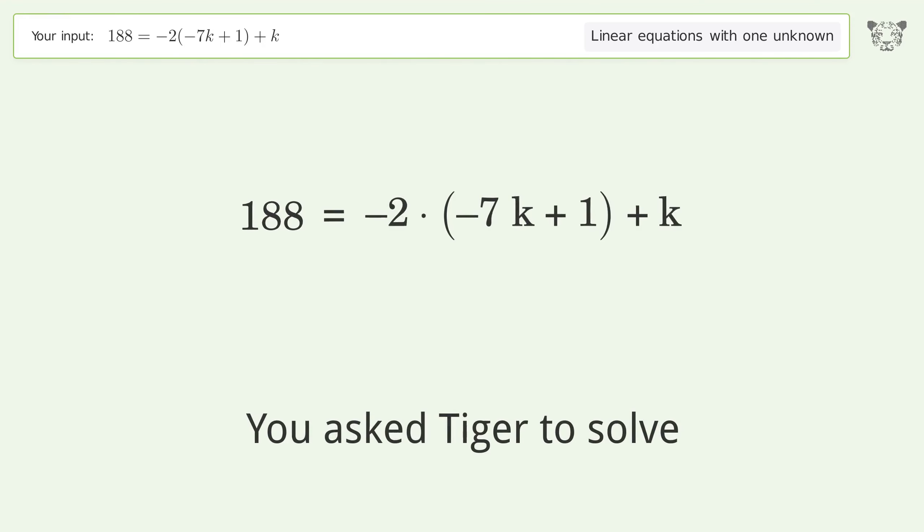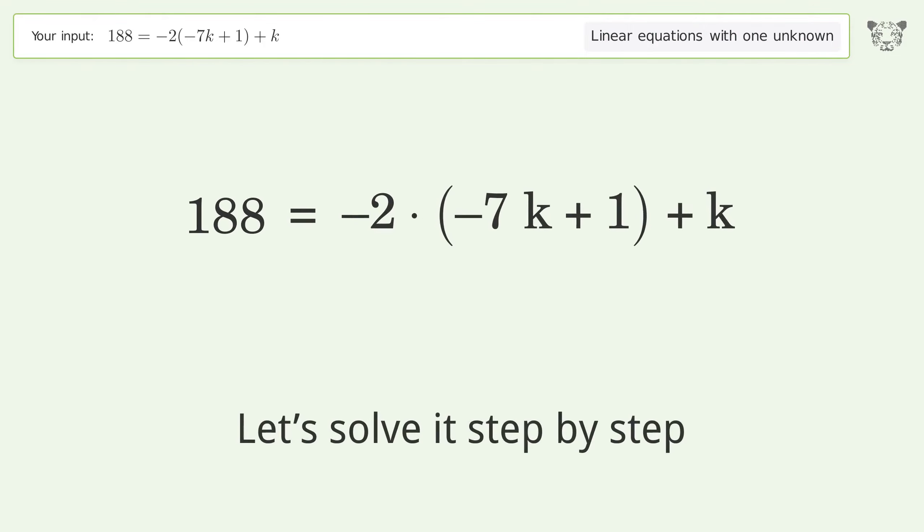You ask Tiger to solve this. It deals with linear equations with one unknown. The final result is k equals 38 over 3. Let's solve it step by step. Simplify the expression, expand the parentheses.